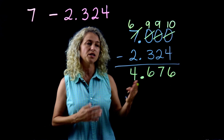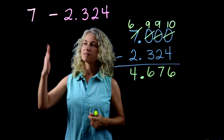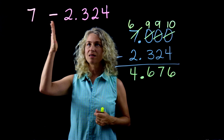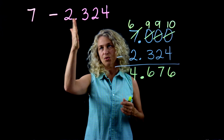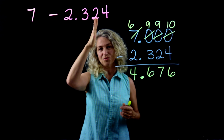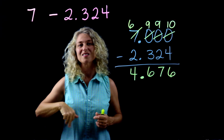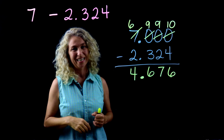Do not forget to bring your decimal down. Four and six hundred seventy-six thousandths is your difference from seven and two and three hundred twenty-four thousandths.